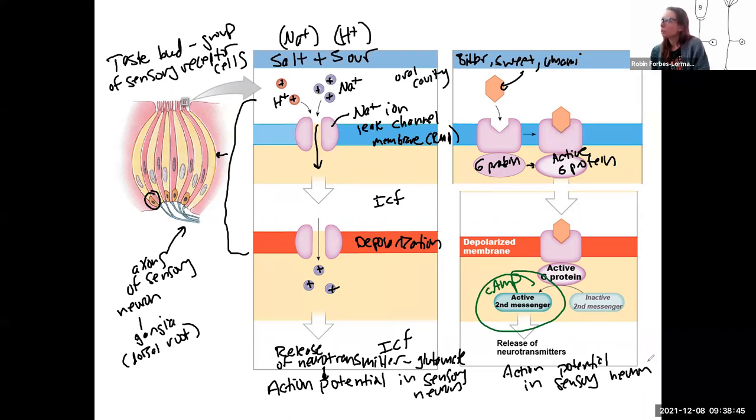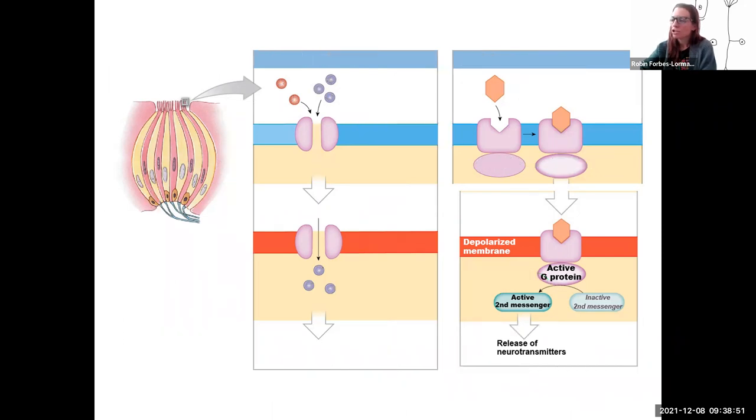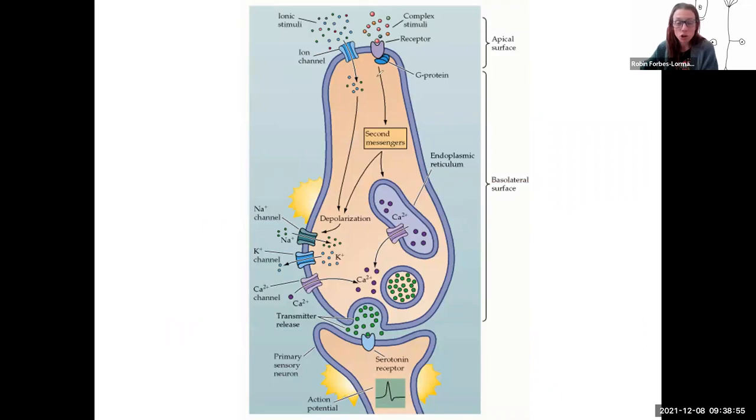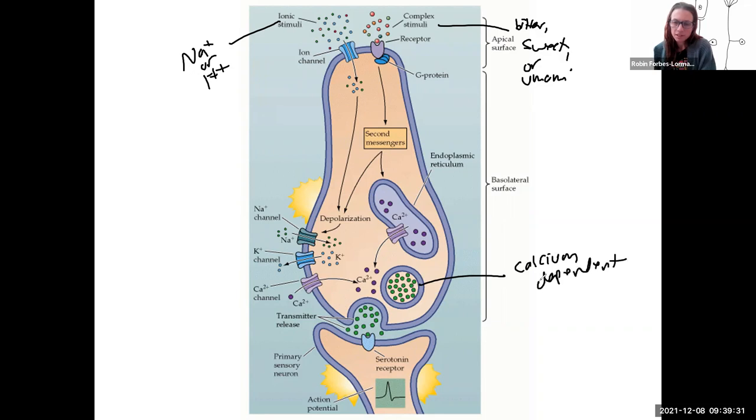So I do have a more detailed picture of both of these on the next slide. So I'm going to go to that. So this is a nice image that goes over what I just showed you with a little bit more anatomy. So you know the terms apical and basolateral. Here's our ion channel for sodium or hydrogen. Here is the complex stimuli. So this is our bitter, sweet, or umami. Ion channels, simple, cause depolarization, which causes further depolarization, and calcium entry for calcium-dependent vesicle release.